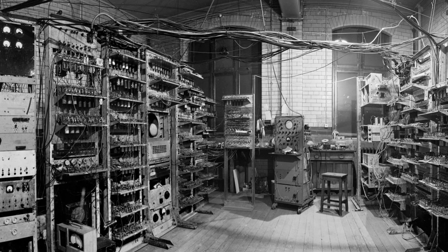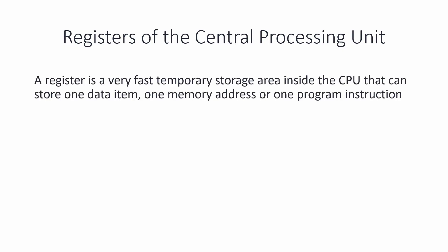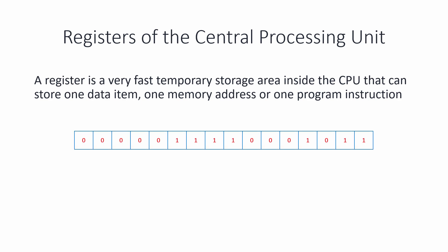In this lesson we're going to focus on the way the contents of various CPU registers change while a program is running. A register is an arrangement of logic gates inside the CPU capable of storing a group of binary digits. A register's contents can change millions of times a second while a program is running, so it has to be designed for quick access. You can see a representation of a 16-bit register here, but these days a register inside a modern CPU can store 64 bits or 128 bits.